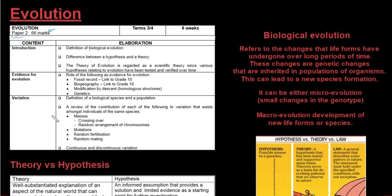Biological evolution refers to the changes that life forms have undergone over long periods of time. These changes are genetic changes that are inherited in populations of organisms and can lead to the formation of new species. This can be microevolution, changes in the genotype, or macroevolution where new life forms or even new species are formed.